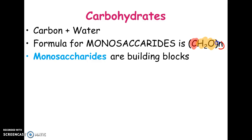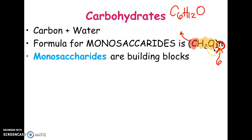This letter N here — if you're not familiar with it — can be replaced with a number, and you'd multiply that number by the carbons, the hydrogen, and the oxygen. For example, one of the monosaccharides we'll talk about is glucose, which has six carbons. If N equals six, then it would have six times two — 12 hydrogens — and six times one — six oxygens. All monosaccharides have the same base formula: a one-to-two-to-one ratio of carbon to hydrogen to oxygen. It basically boils down to carbon water.